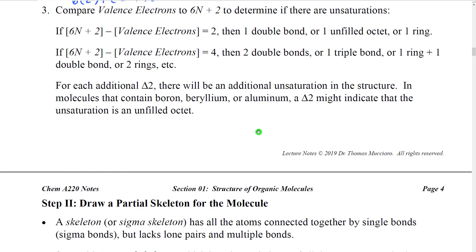We now compare the number of valence electrons from step one to the 6n+2 number from step two — taking the difference: 6n+2 minus the valence electrons. If the difference is 2, we have one unsaturation; if the difference is 4, we have two unsaturations, and so forth.